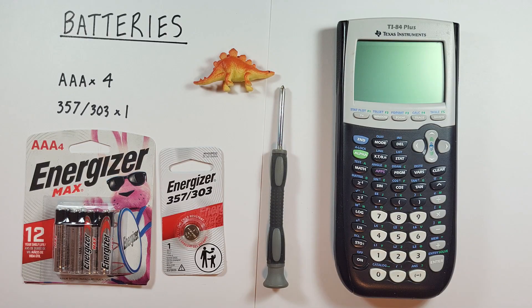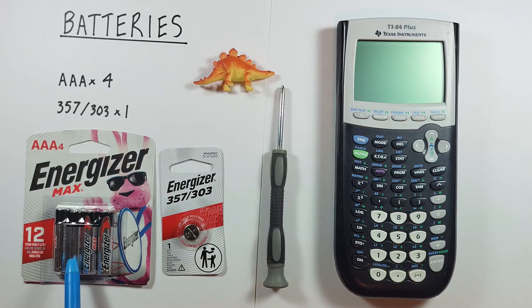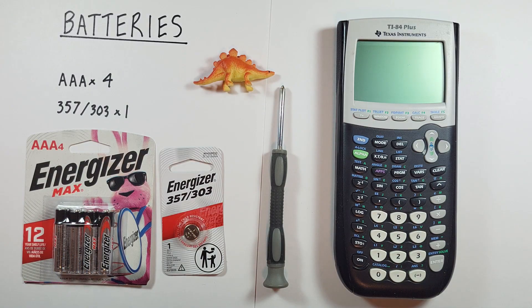To replace my batteries what I need is four AAA batteries for the main power supply and this calculator also uses a 357 or a 303 round battery as the backup battery.